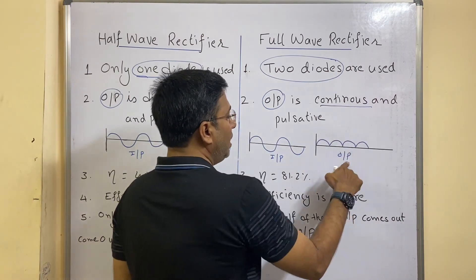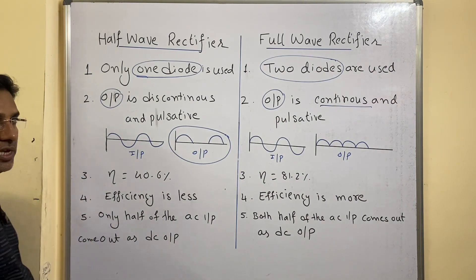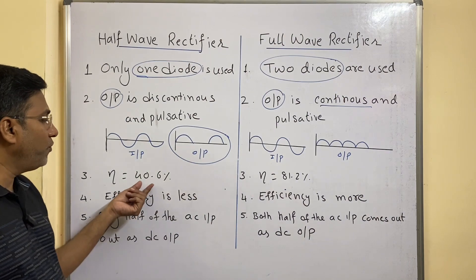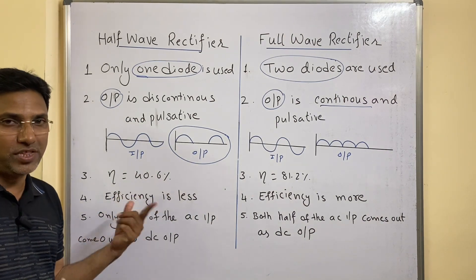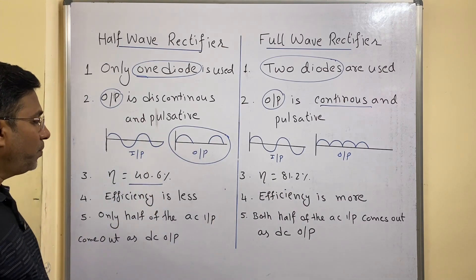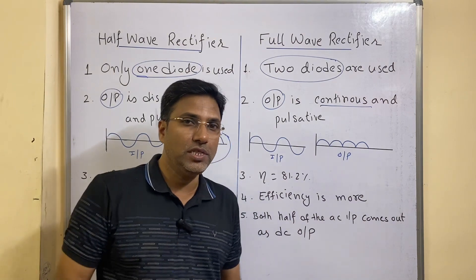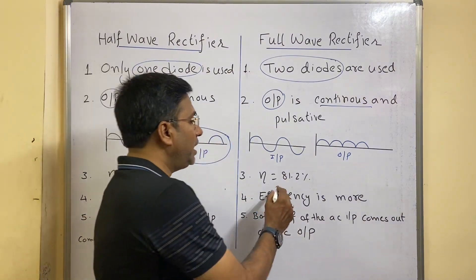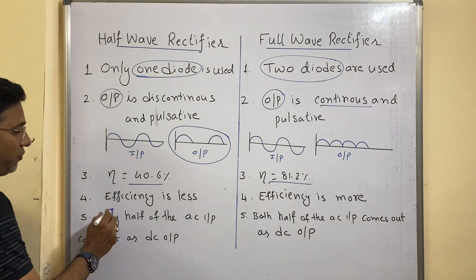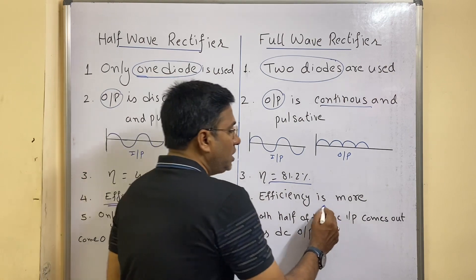Third point regarding efficiency: if you give 100 percent as input, at the output you will get only 40.6 percent. That means the efficiency of half wave rectifier is only 40.6 percent, whereas full wave rectifier is 81.2 percent. So if you compare, efficiency is less in case of half wave rectifier and efficiency is more in case of full wave rectifier.